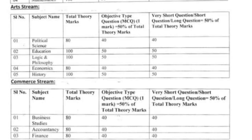For the Arts stream: Political Science is 80 marks theory and 20 marks practical. Of the 80 marks, 40 marks is MCQ — that is 50% — and the remaining 40 marks covers long questions, short questions, and very short questions. Education is 100 marks total.